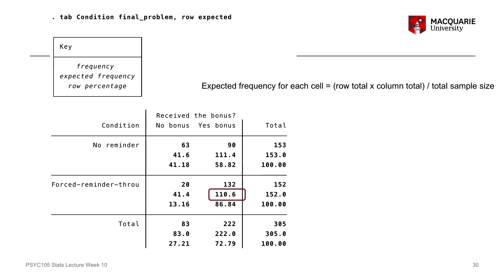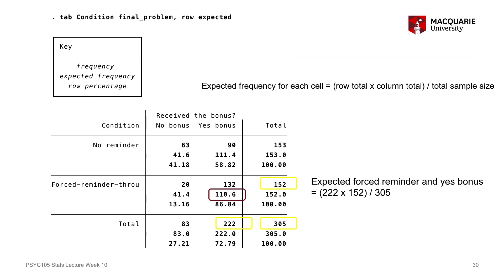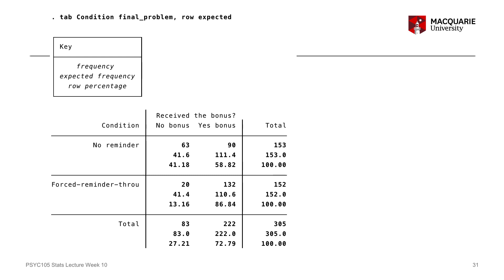That expected frequency, Stata tells us, is 110.6. If we wanted to calculate that ourselves, we take the column total of 222, multiplied by our row total of 152 — the total number of people in the forced reminder through association condition — and divide by our total sample size of 305. That gives you the 110.6 expected frequency that Stata gives us. You could do that for each of the cells, though you don't have to because Stata will tell you anyway.